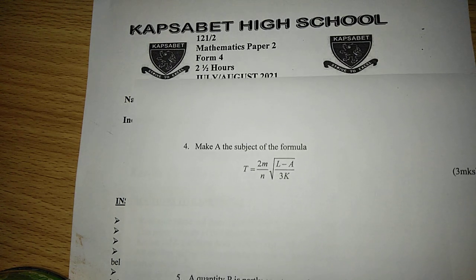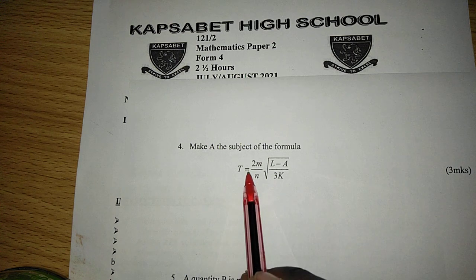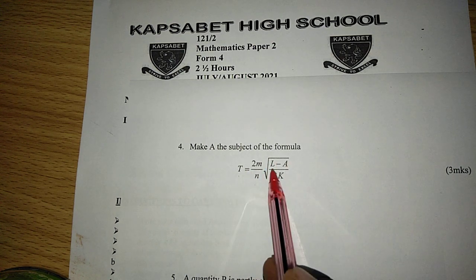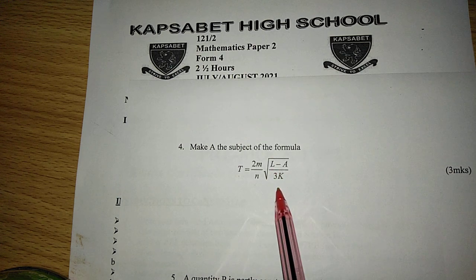A question saying that t equals 2m out of n, then the square root of l minus a, everything divided by 3k.